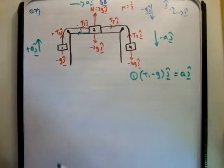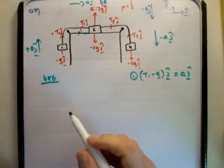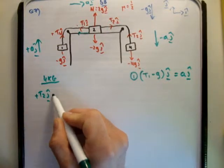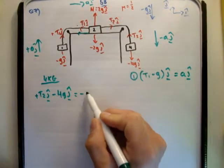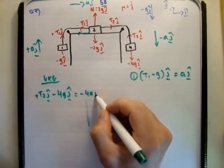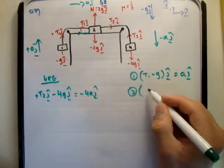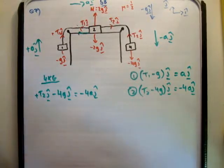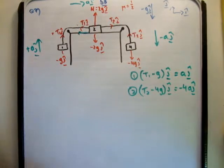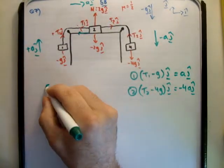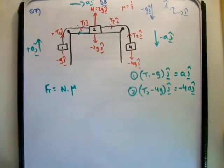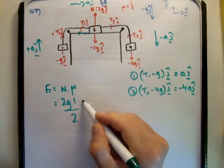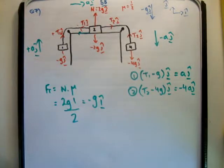Now for the 4 kilo mass: positive T2 j-hat minus 4g j-hat equals negative 4a j-hat. That gives us T2 minus 4g equals negative 4a — that's equation 2. For the 2 kilo mass we also have a frictional force. The frictional force equals the normal force times the coefficient of friction: 2g times one half, giving a frictional force equal to negative g i-hat.